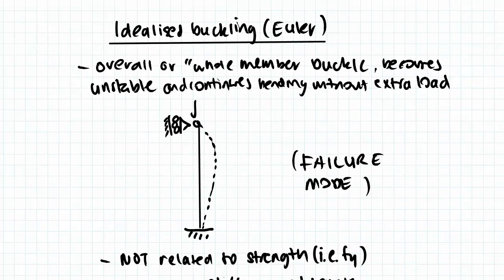Starting with what idealized buckling is. Euler or idealized buckling models a perfect condition where flexural buckling occurs. This is when an overall member begins to buckle, causing a failure mode where it is unstable.